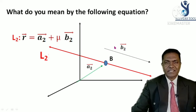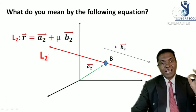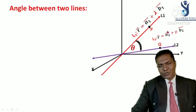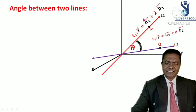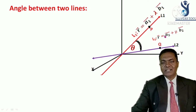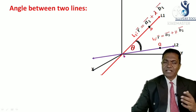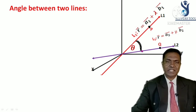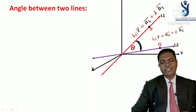The next topic is finding the angle between two lines. Here are two lines L1 and L2. They may be intersecting or passing through the origin, and the acute angle between them is theta. Our aim is to find this acute angle.